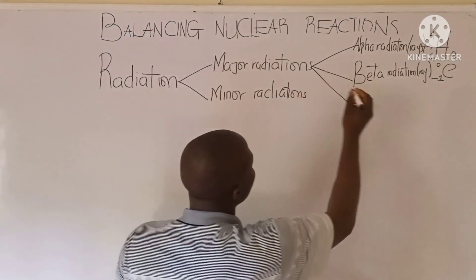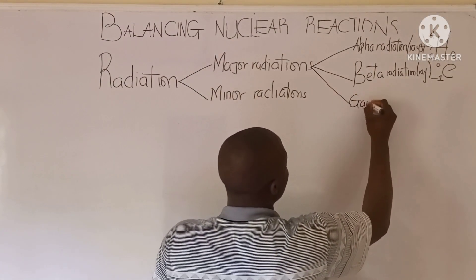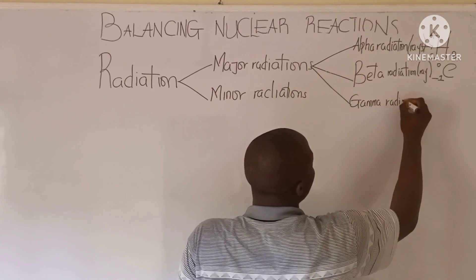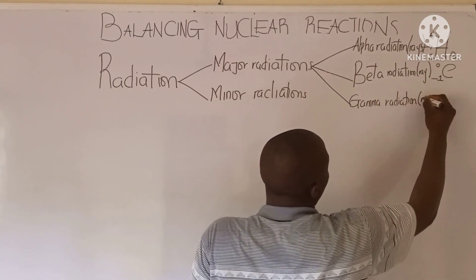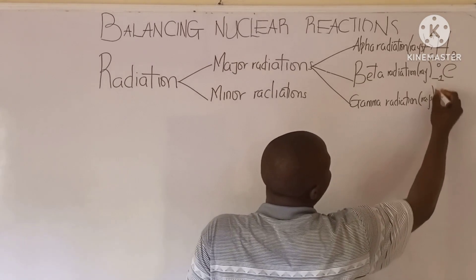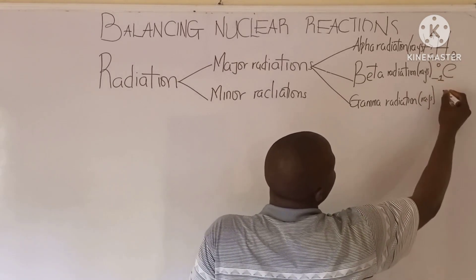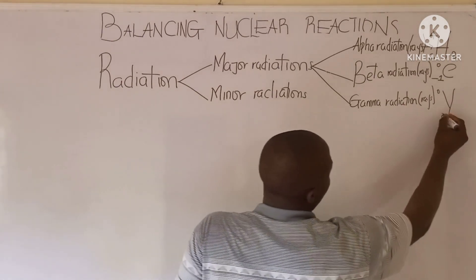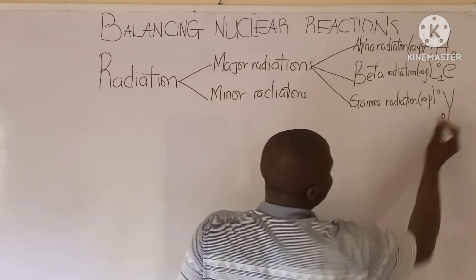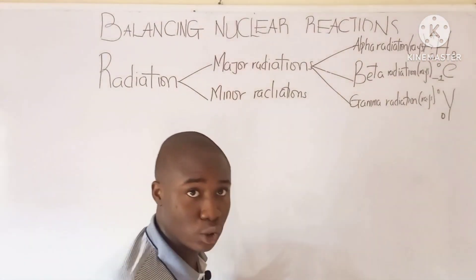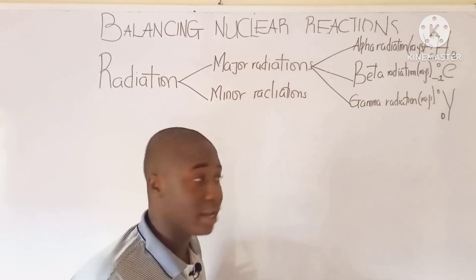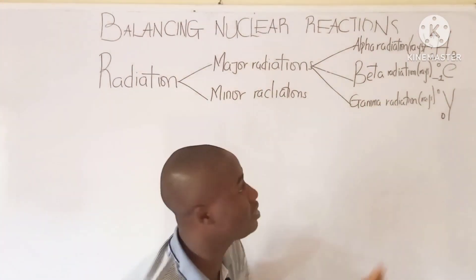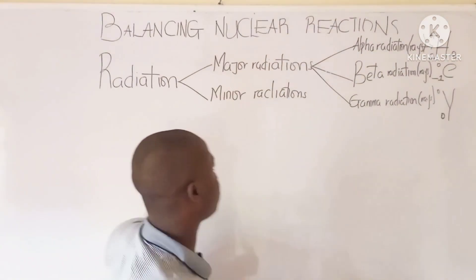For the last major radiation called the gamma radiation — or simply gamma ray — its symbol is represented accordingly. These are the symbols, or the identity, of the three major radiations.